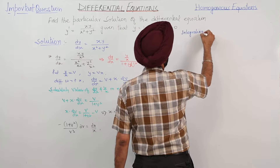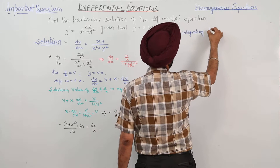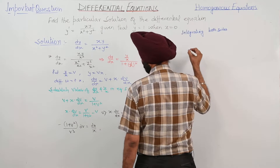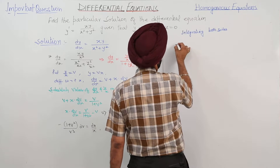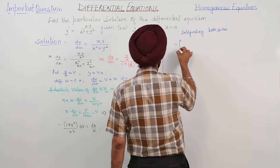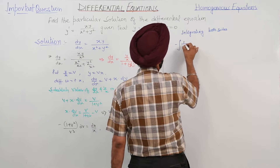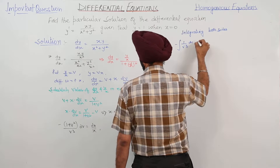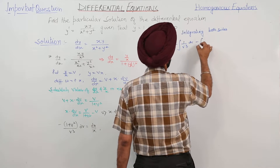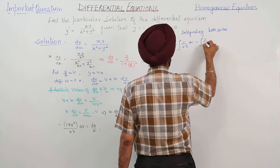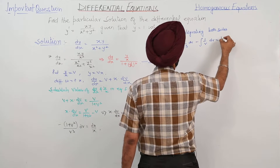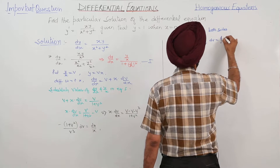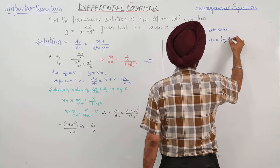Integrating both sides: the integral of (1 + v²)/v³ dv equals the integral of 1/x dx.